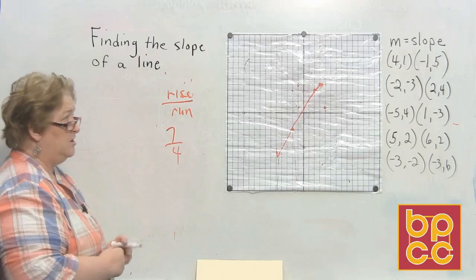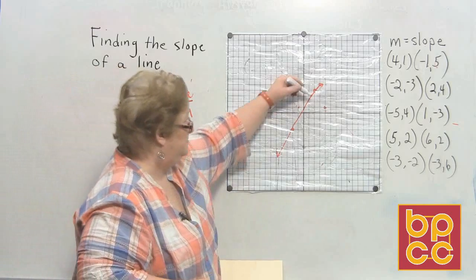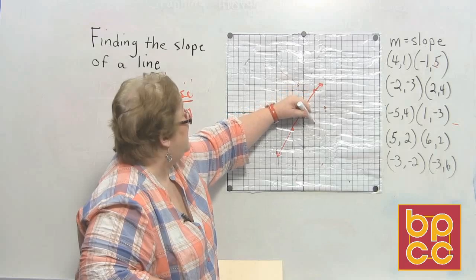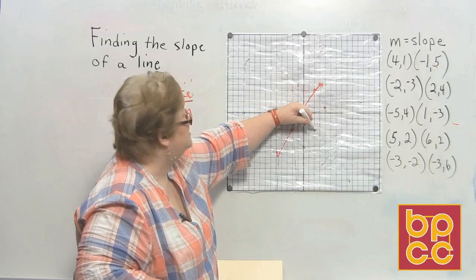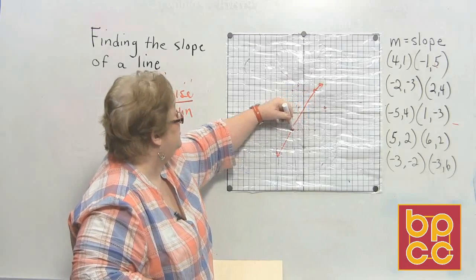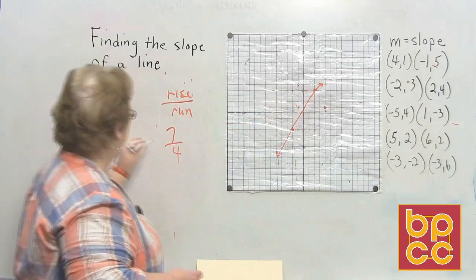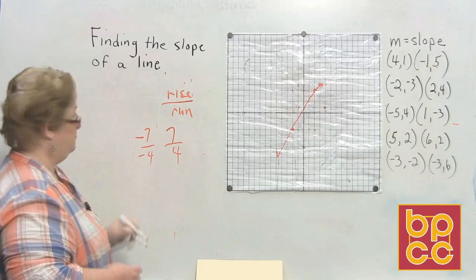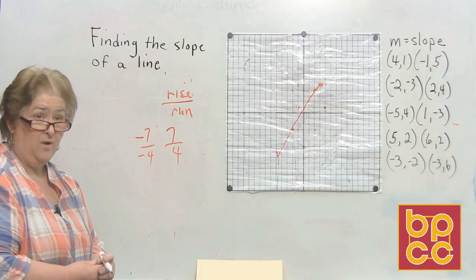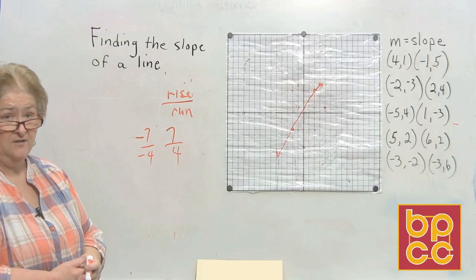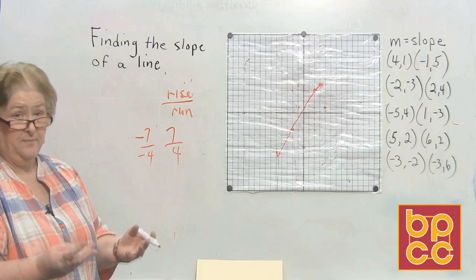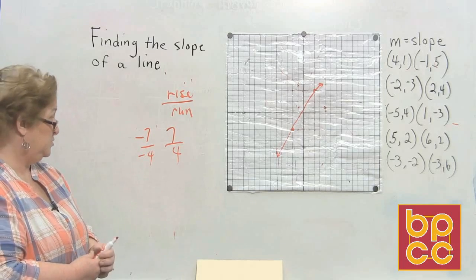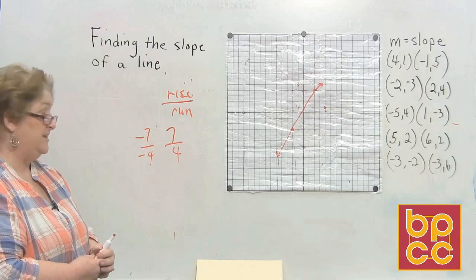Starting at the top point and traveling down: down seven — that's negative seven — then to the left four — that's negative four. So it's a negative seven over a negative four. You can write it either way; I usually change two negatives to a positive. The slope on this one is seven over four.